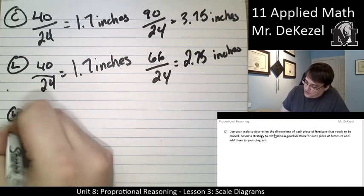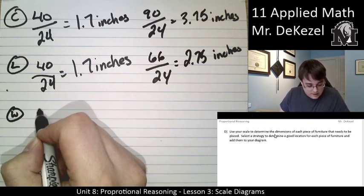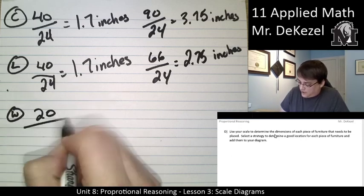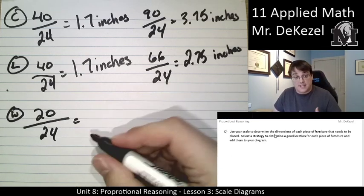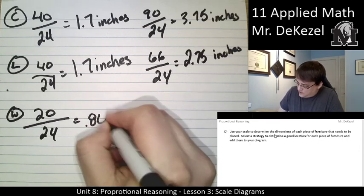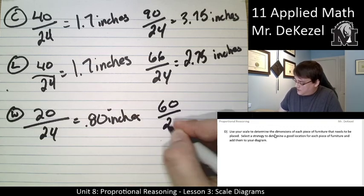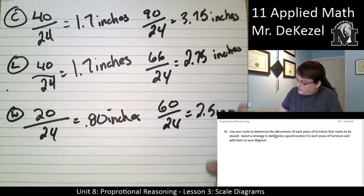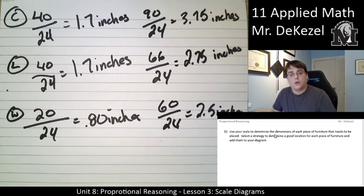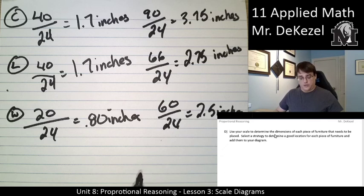We'll do our wall unit. I assume that's where the TV goes. We take 20 for the width divided by 24 to make it 24 times smaller. It should be less than 1. If you're making 20 24 times smaller, it should be a decimal. So that's 0.8 inches. And we get 60 divided by 24, we get 2.5 inches.